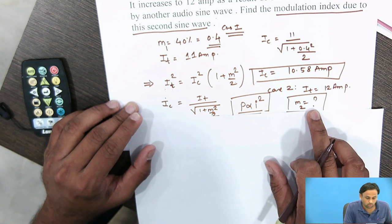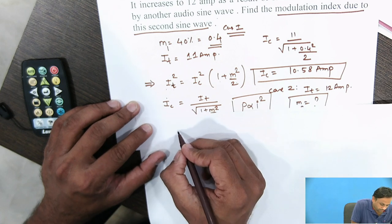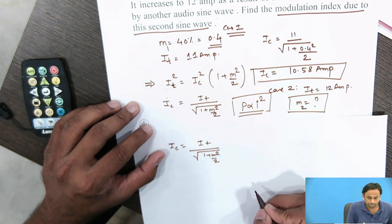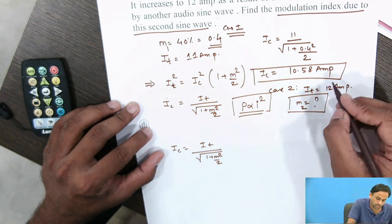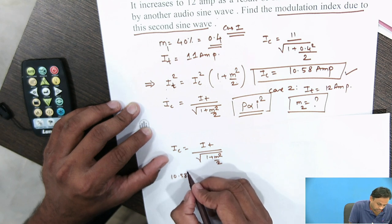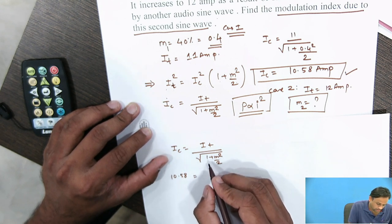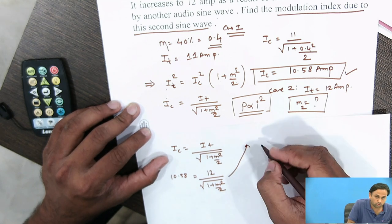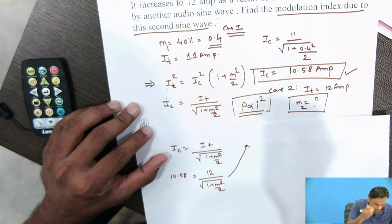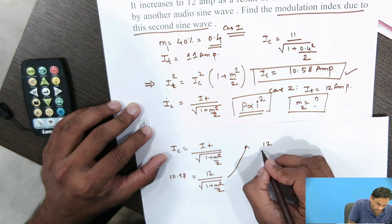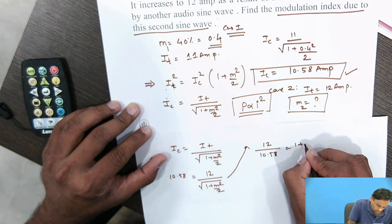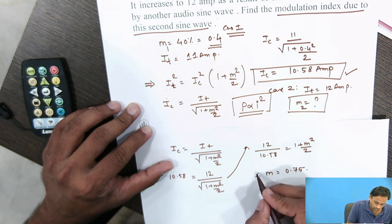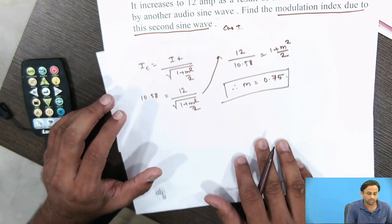Solving the equation with IC = 10.58 and IT = 12: (12/10.58)² = 1 + M²/2. After solving, M comes to be 0.75. This is the total modulation index MT for the combined two-sine-wave case.